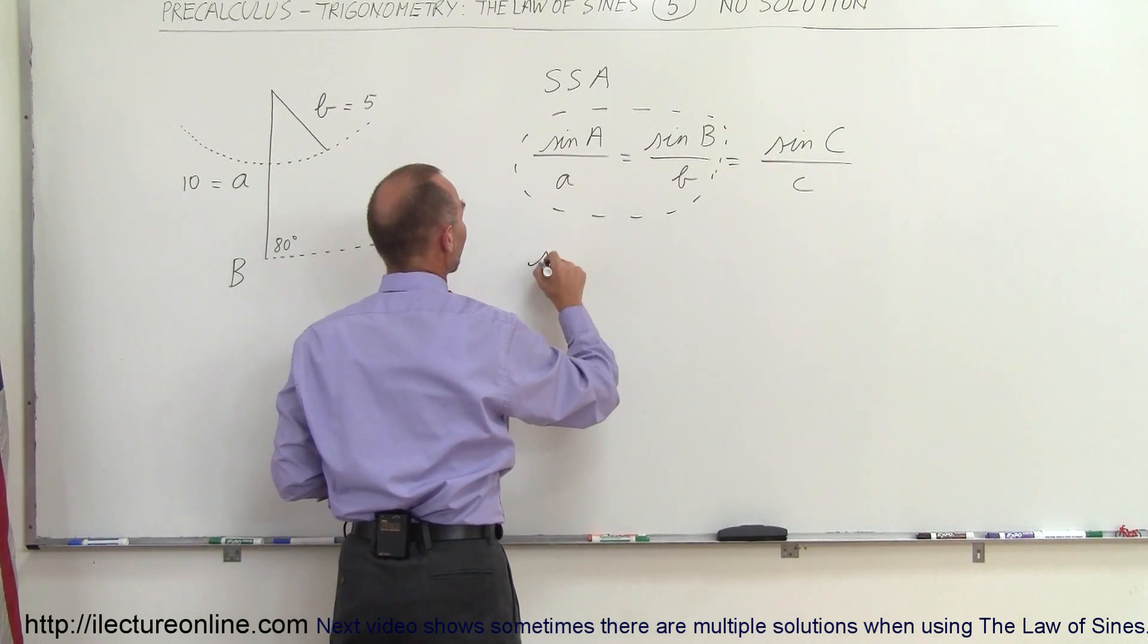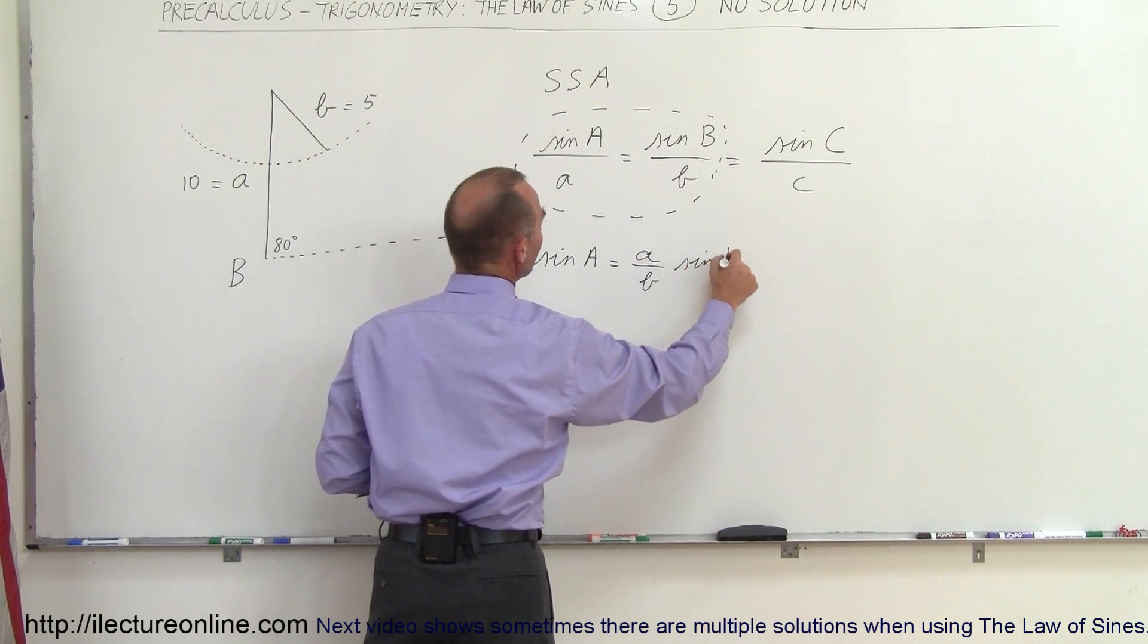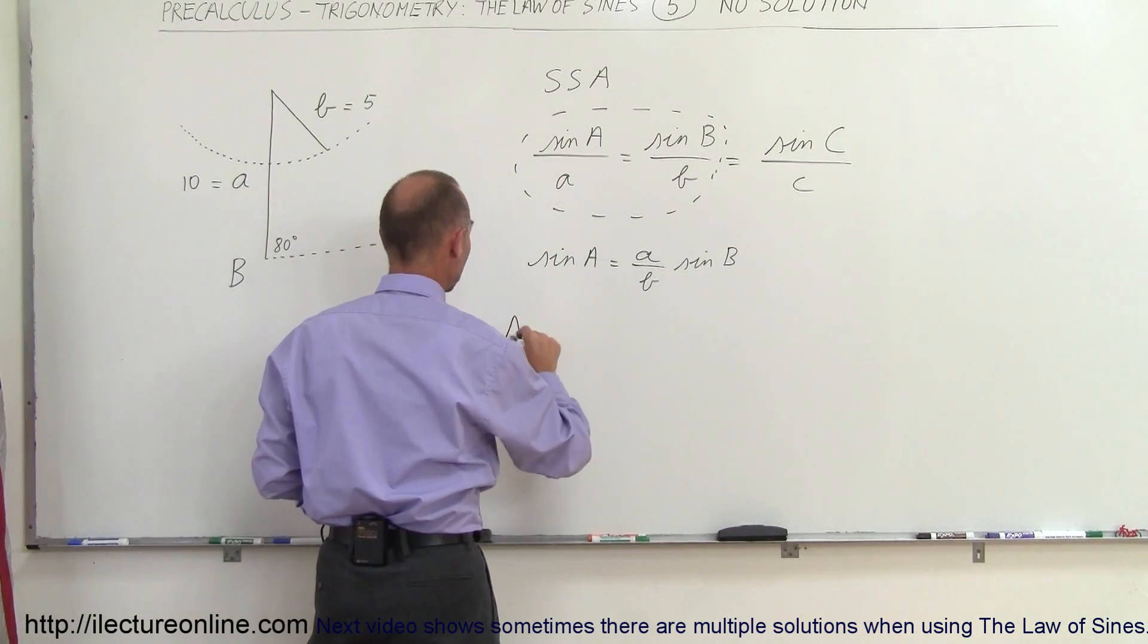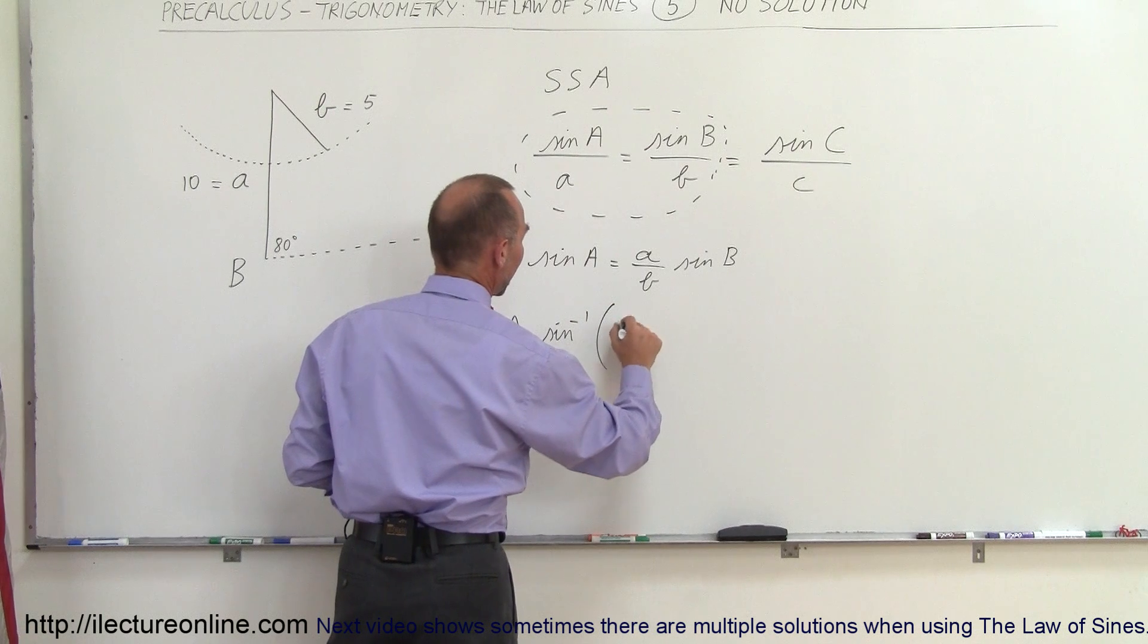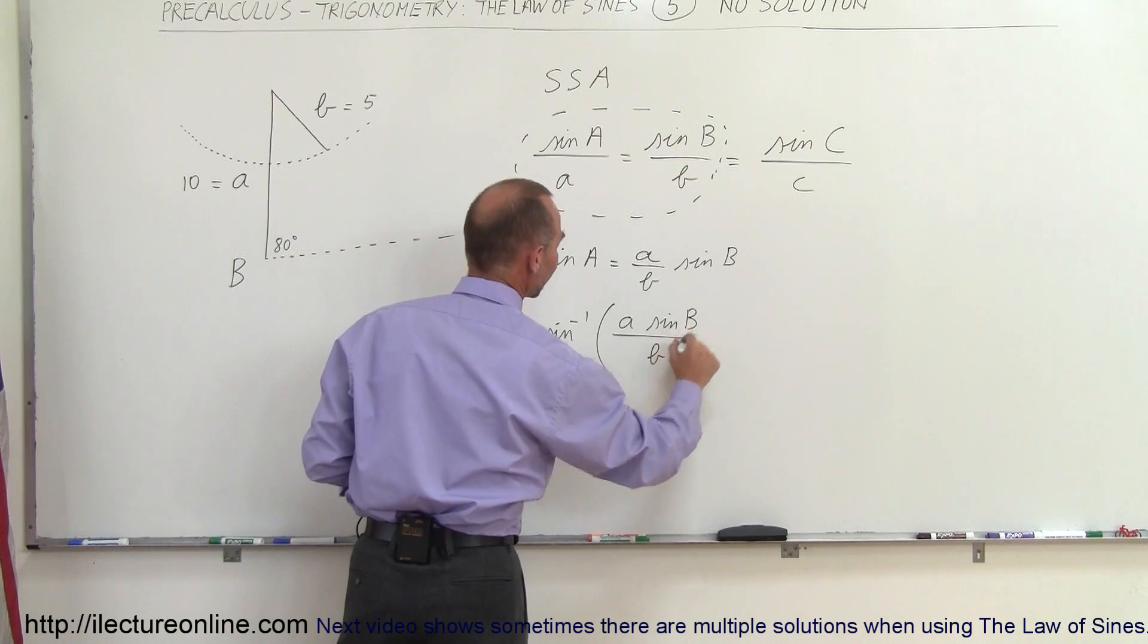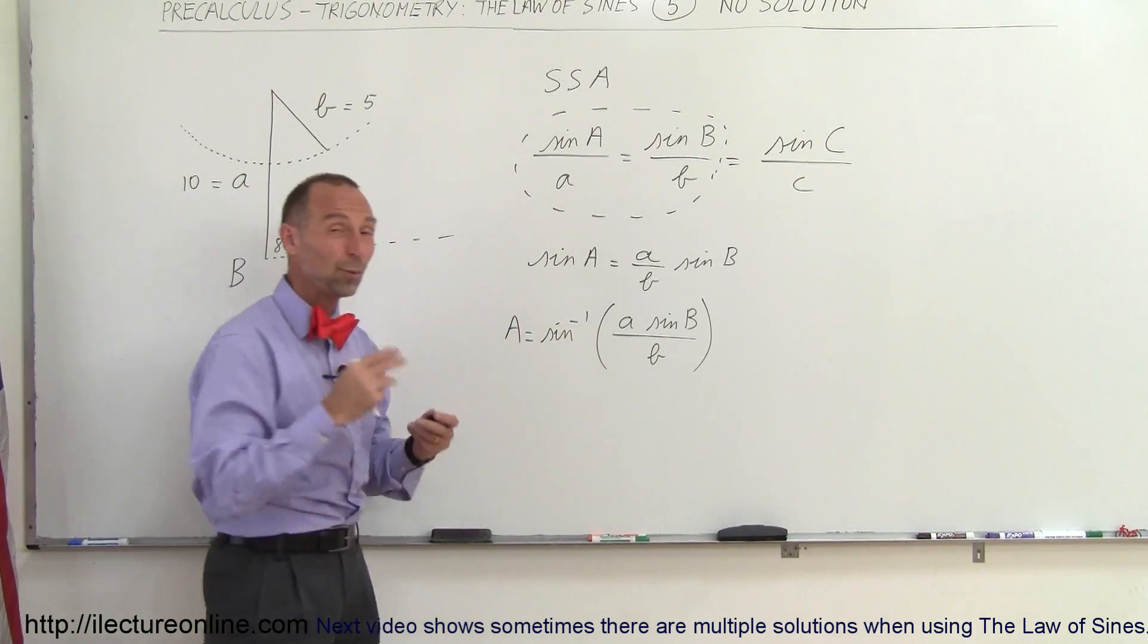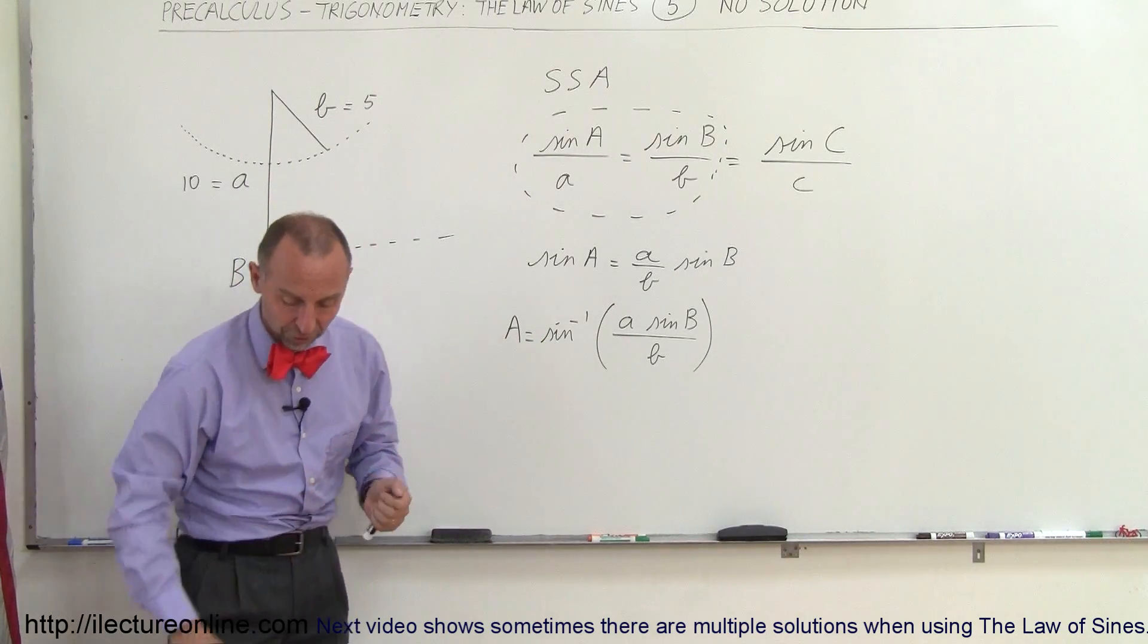So we end up with sine of A is equal to A divided by B times the sine of B. And of course then we take the arcsine of that to find the angle. So A would then be equal to the arcsine of A times the sine of angle B divided by side B. And of course you already know that if this number is not between one and negative one, you can never find the angle, you can never take the inverse sine of that.